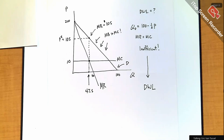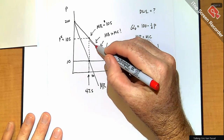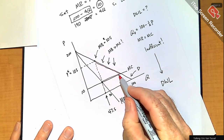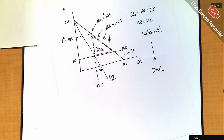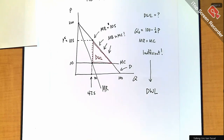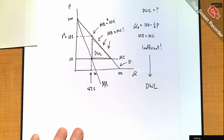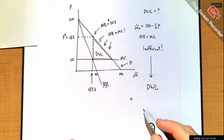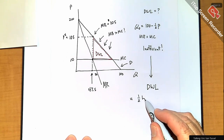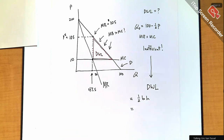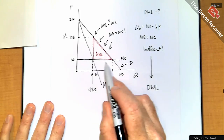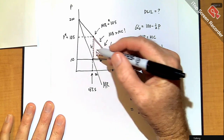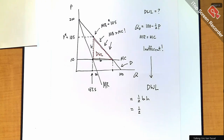So that red triangle right there is the deadweight loss — the source of the inefficiency in a monopoly. The deadweight loss is $2,256.25 — that's the measure of the inefficiency. If we allow monopolists to operate in the market, the cost to society is $2,256.25. This is why people love economics: you can put suffering into a number and present it to senators.